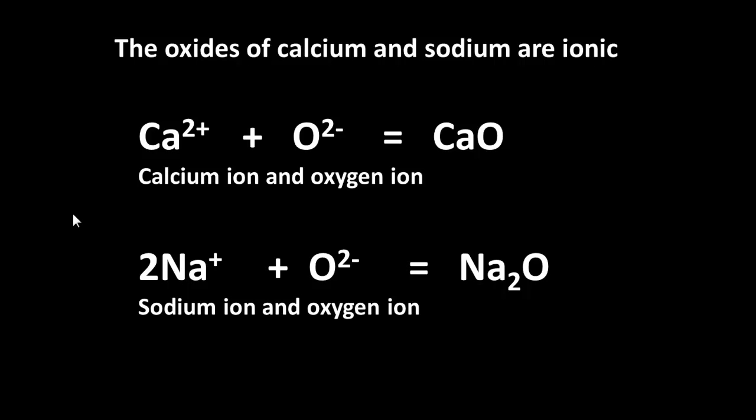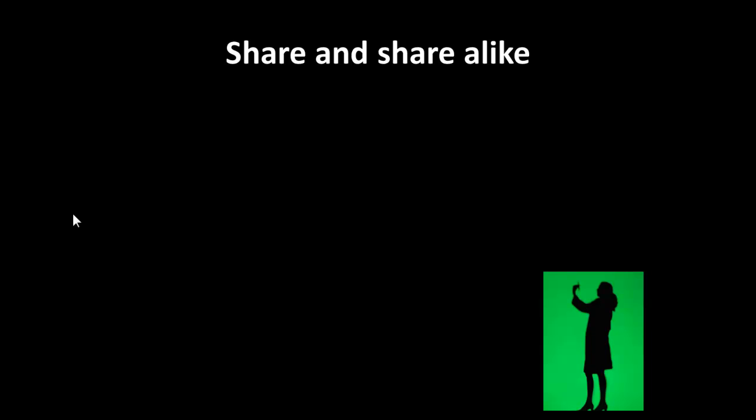So we can write it as Ca2+ plus O2- equals CaO. You can do the same for sodium and oxygen. In this case, two sodium ions are needed, each one of which will lose an electron, so that the oxygen atom can gain its two electrons.